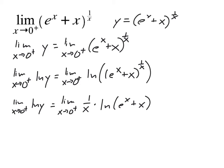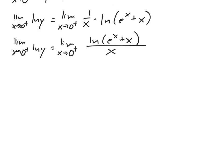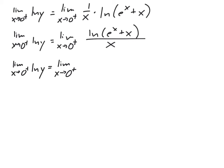Now that I've taken the natural log of both sides and pulled out the exponent, I need to use L'Hôpital's rule on the right-hand side, so I write it as a fraction. Since this is already 1 over x, it tells me how to set up the fraction: natural log of e to the x plus x on top, over x on the bottom. Using L'Hôpital's rule, the derivative of the top is 1 over e to the x plus x, times e to the x plus 1 by chain rule. The derivative of the bottom is just 1.